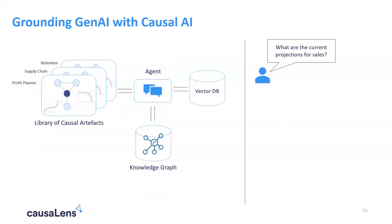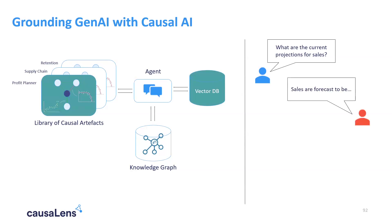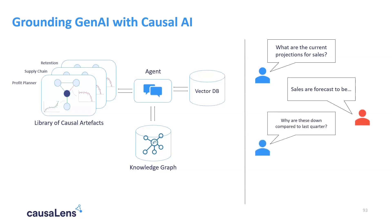But there are ways to connect generative AI models with causality. You can ground them by building causal models into generative AI — for instance, you can query a library of causal artifacts, compute certain things using a causal AI methodology, and then use large language models to answer questions based on those computations.